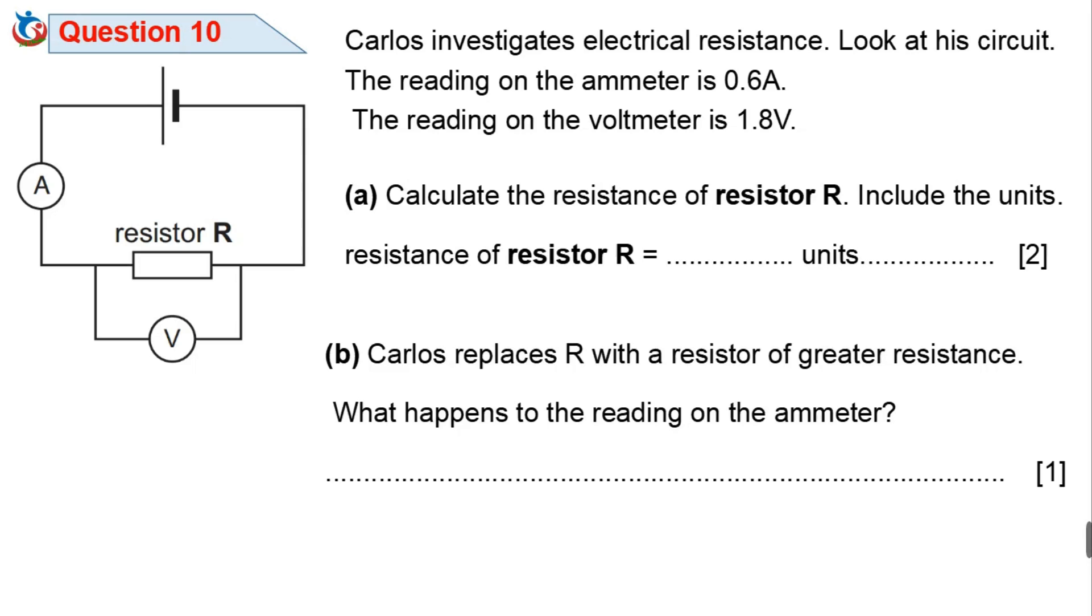This is for two marks. The general formula of Ohm's law is V equals IR, where V is for voltage in volts, I is for current in amperes, and R is for resistance in ohms. We are given the voltage as 1.8 volts and current as 0.6 amps. To find the resistance, simply make R in the general formula the subject of the formula. So R will now be V over I, which is equal to 1.8 divided by 0.6. This will give us 3, and the unit of resistance is ohms. The resistance of the resistor in this circuit is 3 ohms.